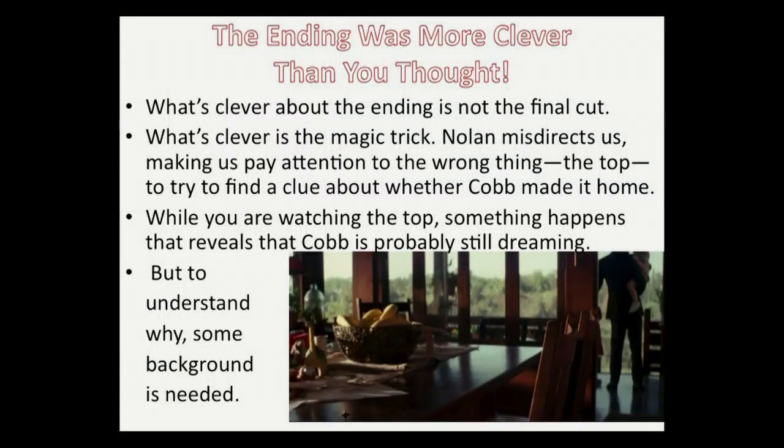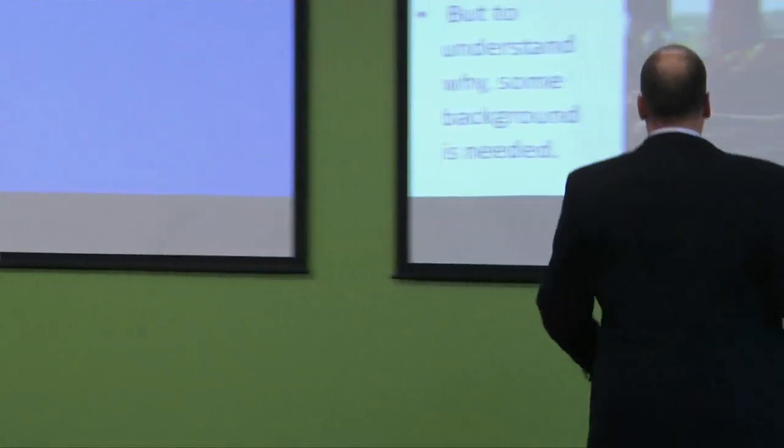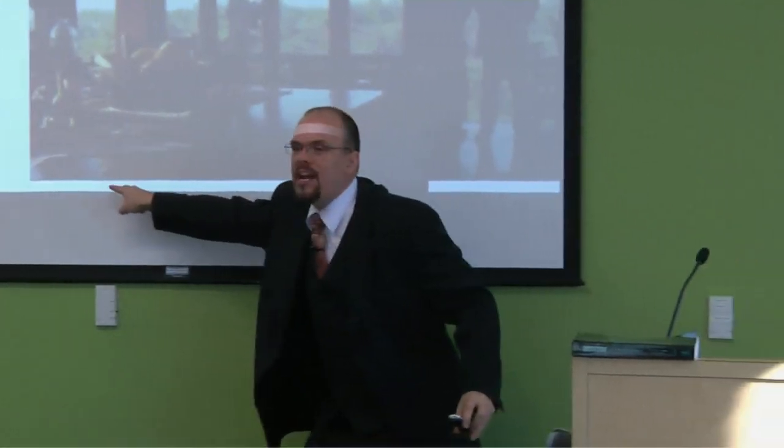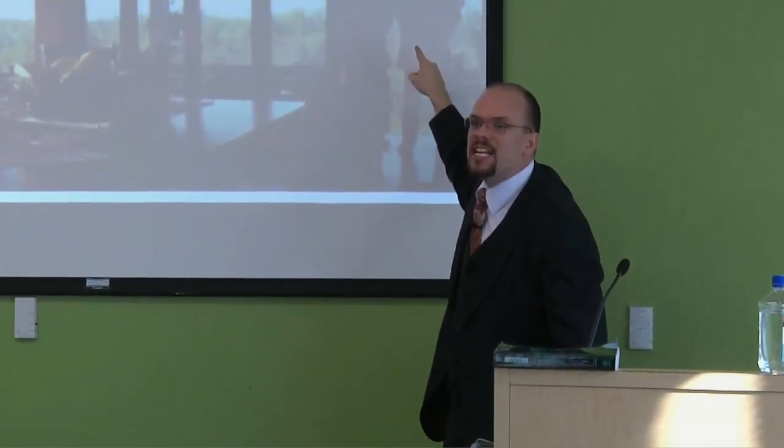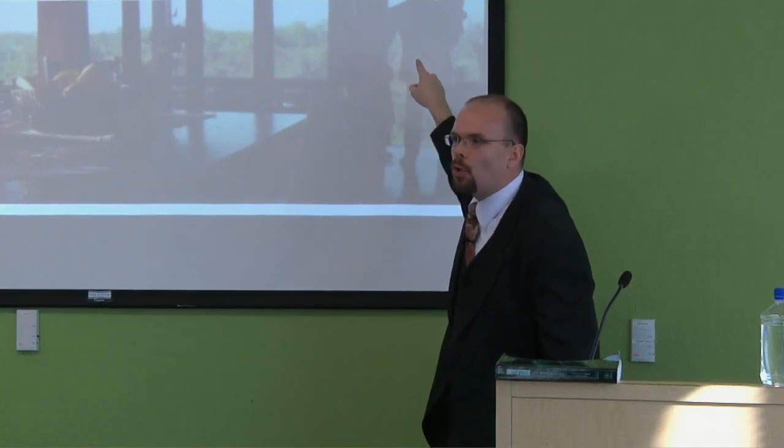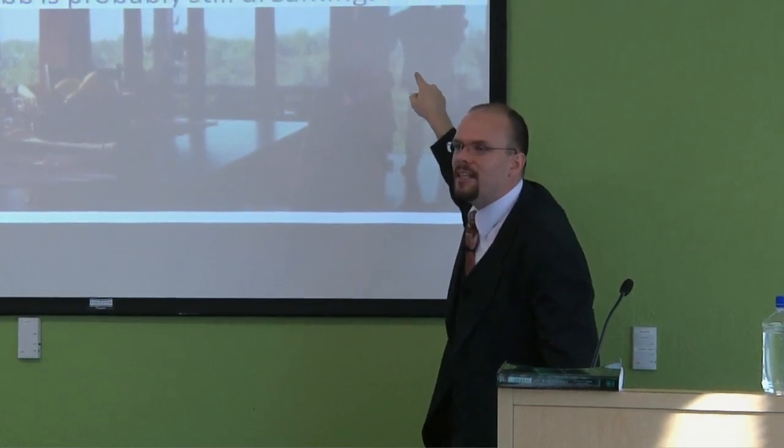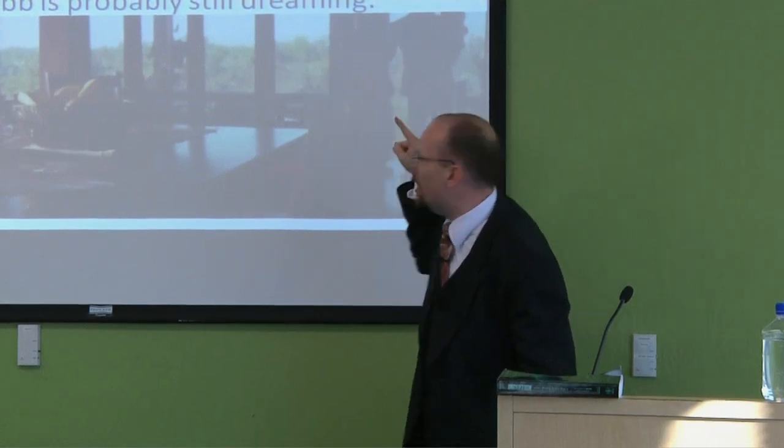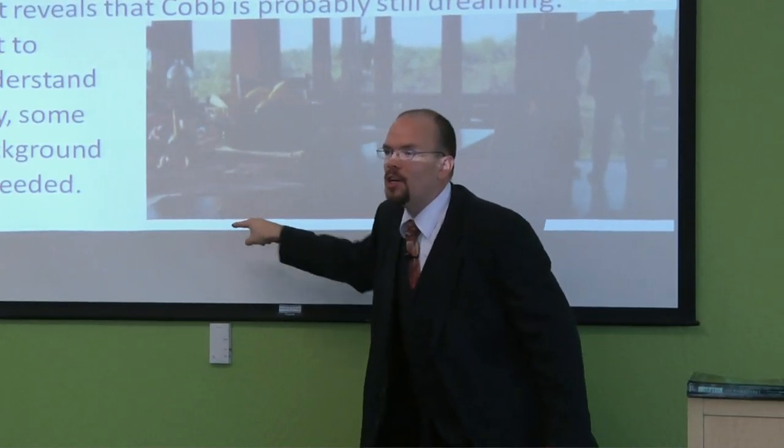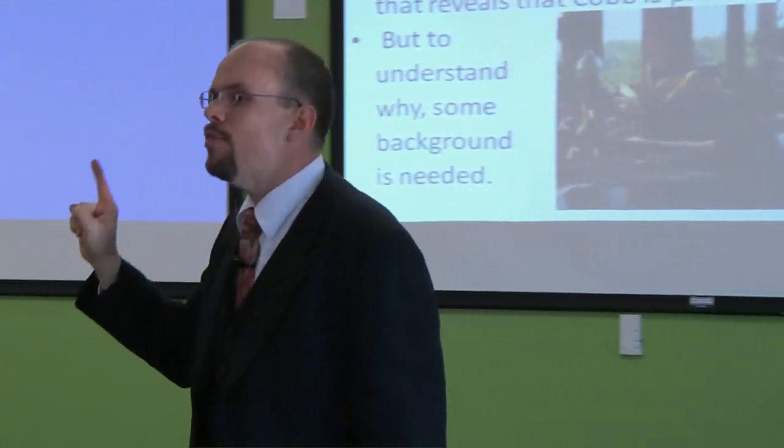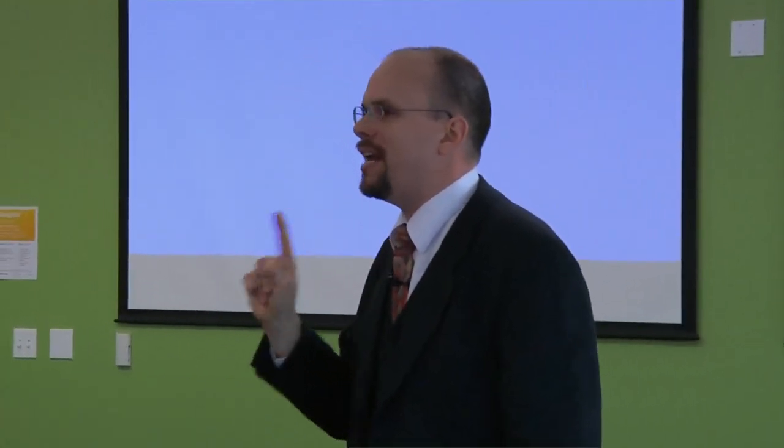Nolan has misdirected you, trying to make you pay attention to the wrong thing, the top, to try to find out whether Cobb is still dreaming. So you're looking at the top - will it fall, will it fall? While you're looking, the clue is up here on the upper right. But you need to be watching and listening to those children whenever they first meet Cobb after he's back home. That's where the clue is. But you didn't hear it because you were looking at this. Cobb has misdirected you.